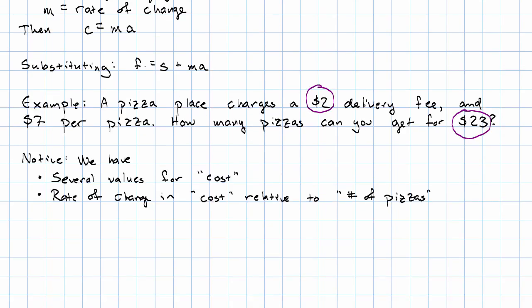So, we want the final amount that we pay, $23, to be the base price, $2, plus $7 per pizza times the number of pizzas that we're getting. That makes sense, right? This expression here represents the cost to buy A pizzas, and this $23 represents what we want to spend.